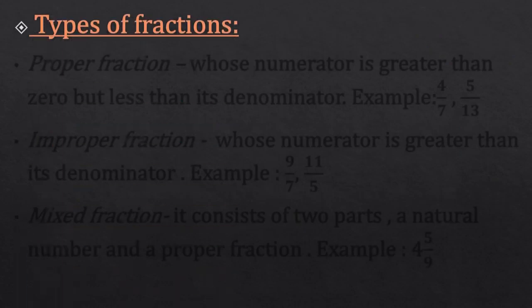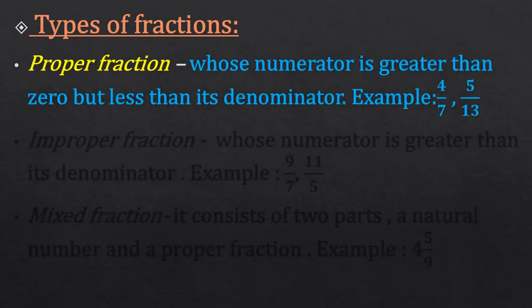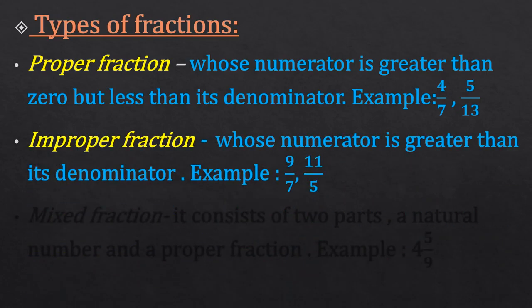Our next topic is types of fractions. The first is proper fraction. A proper fraction is a fraction whose numerator is greater than 0 but less than its denominator. Examples are 4 upon 7, 5 upon 13, and many more.